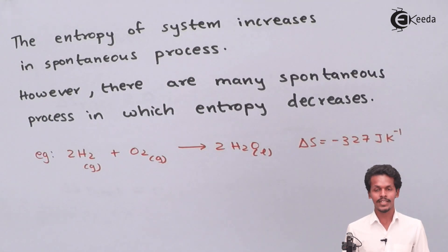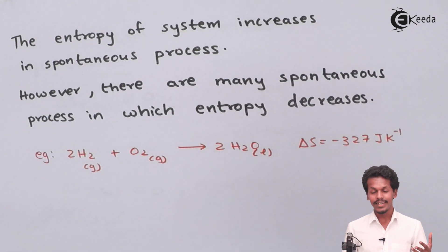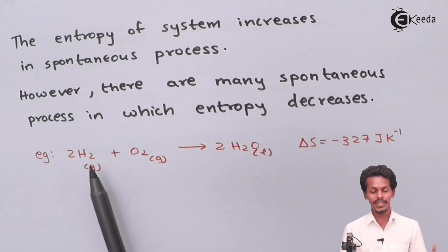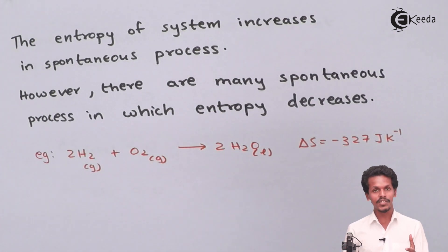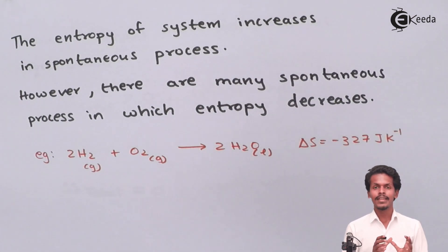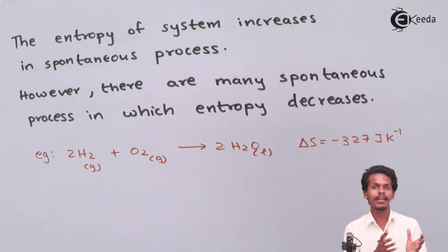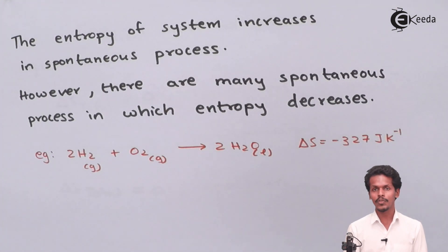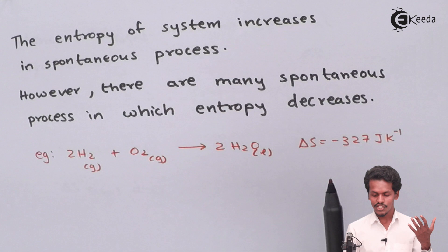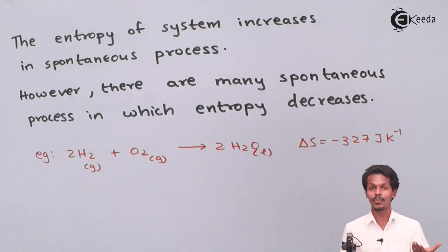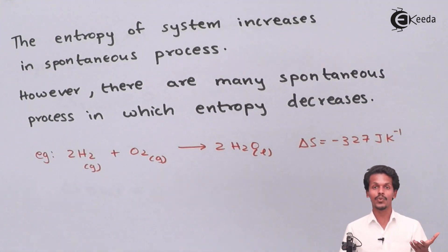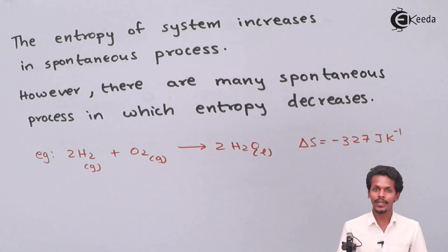In reality, hydrogen and oxygen combine violently and spontaneously to produce water, even though entropy decreases. This is because the gaseous molecules come together to form a more ordered liquid state, converting from a disordered to an ordered state. So the reaction is spontaneous despite having a negative ΔS_system — confirming that spontaneity depends on total entropy, not just the system's entropy.